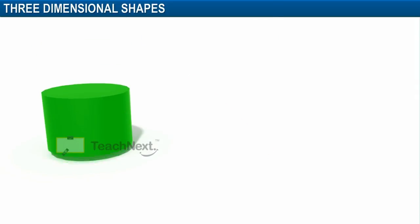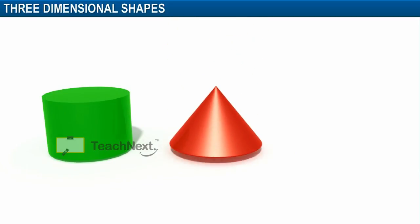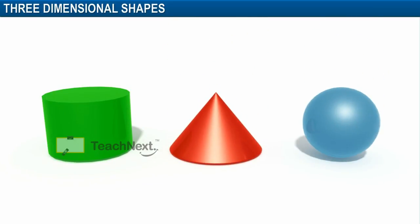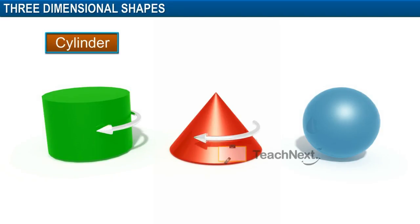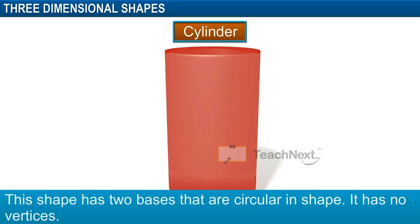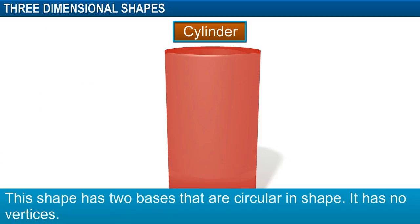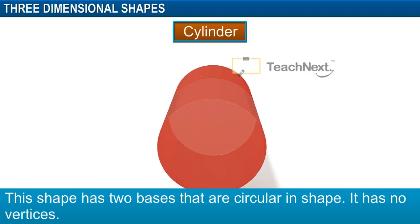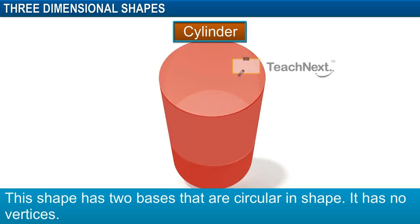Now, let's look at some other solid shapes that do not have flat surfaces. For example, a cylinder, a cone and a sphere. Observe the cylinder. This shape has two bases that are circular in shape.